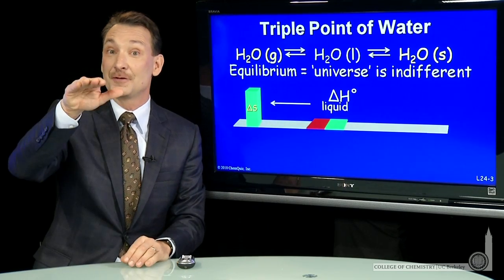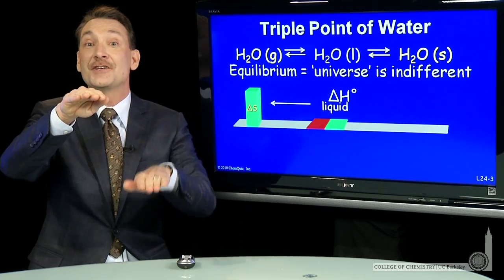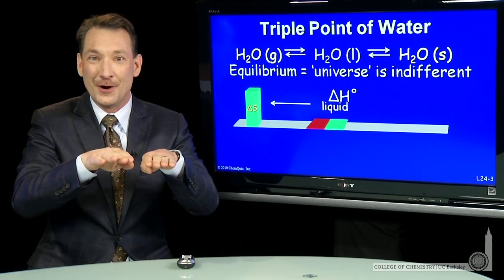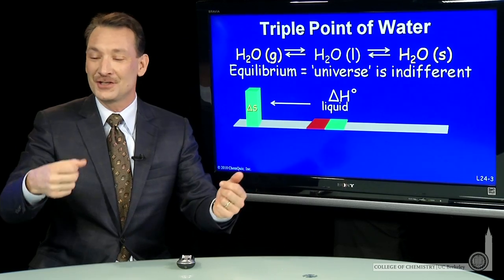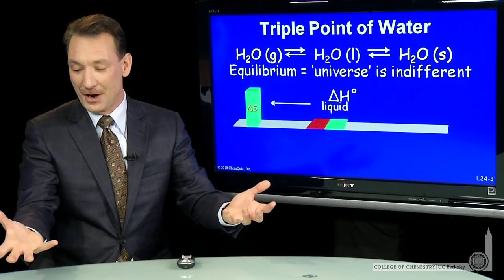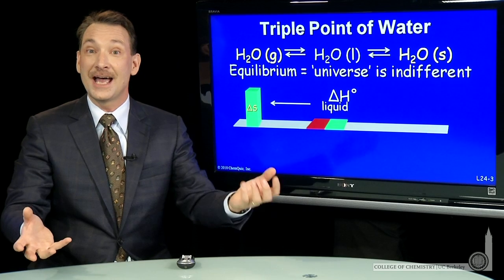So system entropy increasing, surroundings entropy decreasing. The overall balance is zero, and there's no net tendency for the reaction to go one direction or the other. It's equally likely to go from products to reactants or from liquid to gas.